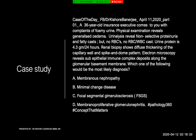Renal biopsy shows diffuse thickening of the capillary wall and a spike and dome pattern. Electron microscopy reveals sub-epithelial immune complex deposits along the glomerular basement membrane. Which of the following is the most likely diagnosis? The options include membranous nephrotic syndrome. To deal with this kind of case, we'll start with a series of discussions on nephrotic syndrome.